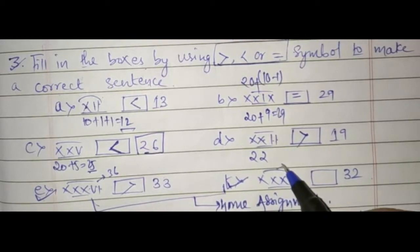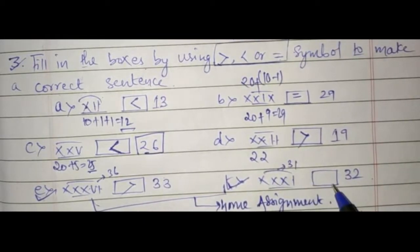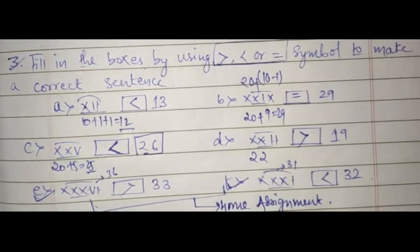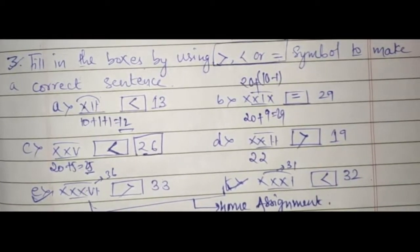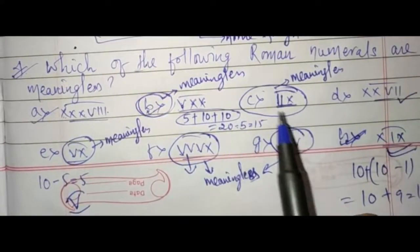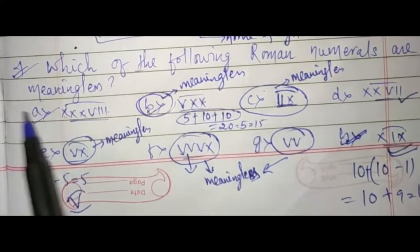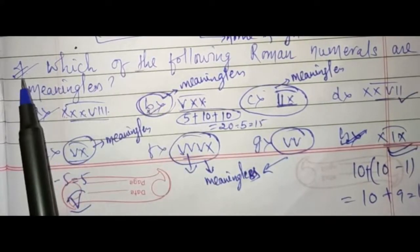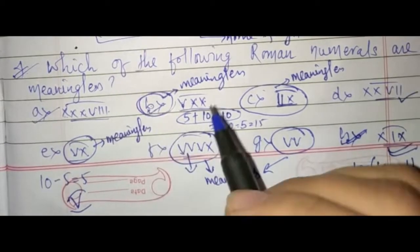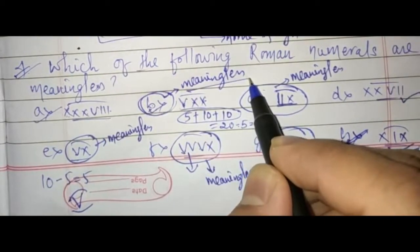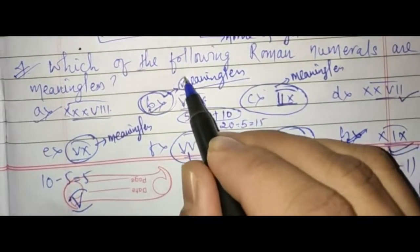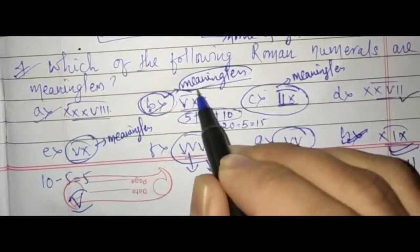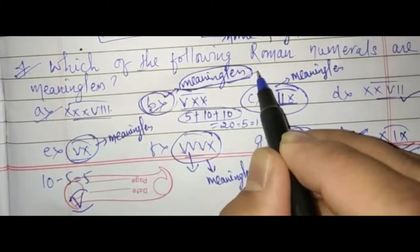Similarly, XXXI is 31. So which one is greater? 32 is greater, right? With this, we are over with our home assignment. Now we will proceed further to the class assignment. But before that, I forgot to mention one more thing from the last class: from question number 4, part B will also be meaningless, okay? So keep number B as meaningless.